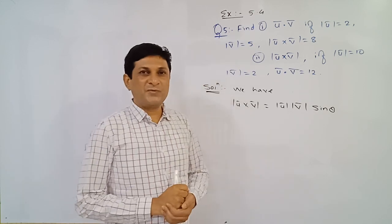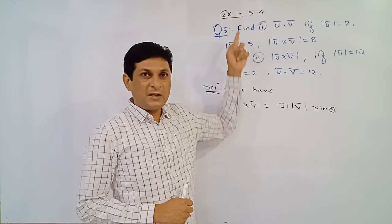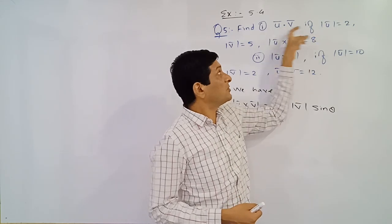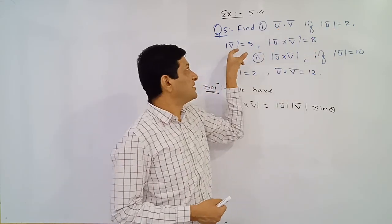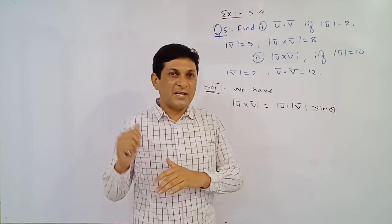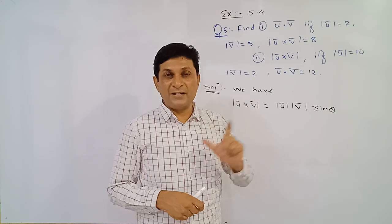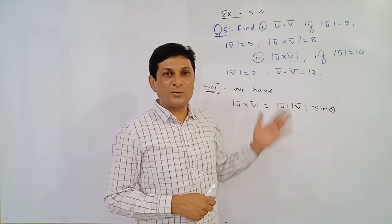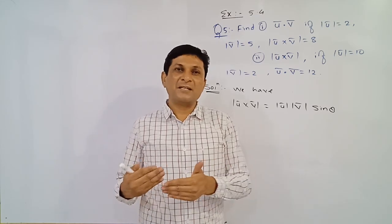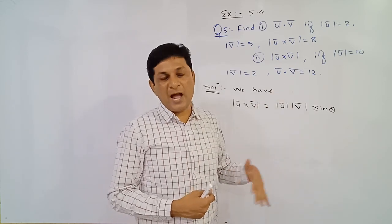In the last video we solved the first four examples from exercise 5.4. Now we are solving example number 5. The dot product is given; we have to find out the dot product. Magnitude of u-bar, magnitude of v-bar, and magnitude of the cross product are all given. We have seen one relation between dot product and cross product — that identity is called Lagrange identity. These examples can be solved applying Lagrange identity, but since that result is not given as a theorem or formula, we first have to prove that identity and then apply it.